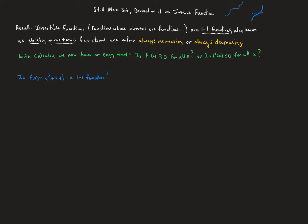The question is: is f(x) = x³ + x + 1 a one-to-one function? With our newfound idea, we take the derivative, which is 3x² + 1. No matter what you plug in for x, x² is positive, times 3 is positive, plus one is still positive. So this is always greater than zero, meaning the function is always increasing — and therefore it will have an inverse.